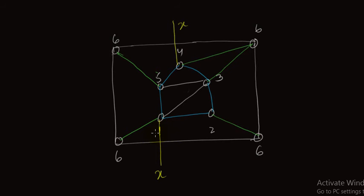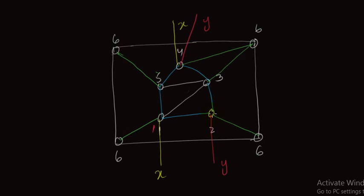As you can see, vertex 1 is now connected to all other vertices. Now we move to vertex 2 and connect it to all other vertices. Vertex 2 is connected to 6, to 1, and to 3. Vertex 2 still needs a connection with 4 and 5. So I draw an edge and call it edge y. This y edge will meet the other y edge upon folding, so vertex 2 will be connected to vertex 4.